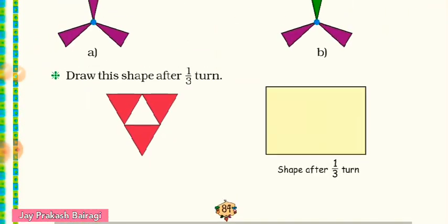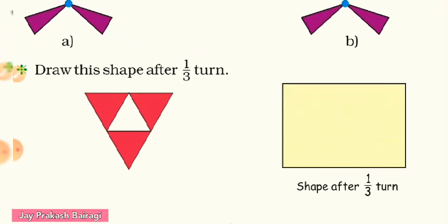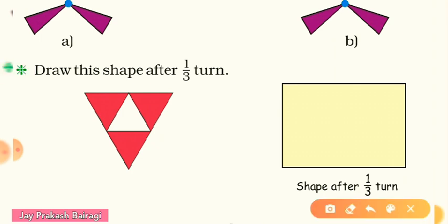Now the next question: draw the shape after one third turn. Here we have a big triangle with red color and a small triangle in white inside it.